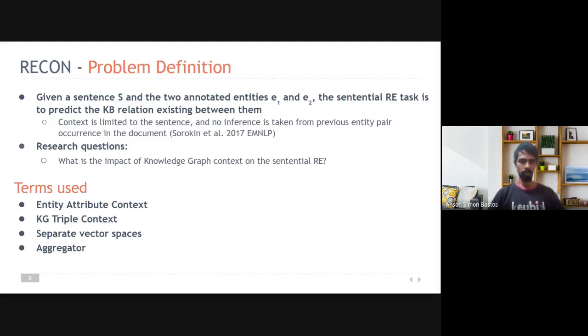To familiarize the audience with the terms used, entity attribute context refers to the T-box attributes of the entities in the KG. KG triple context refers to the triples in the neighborhood of the entities being considered. Separate vector spaces refers to the separation of vector spaces or embedding spaces between the entity and relation vectors. And the aggregator is a module which combines all the context information.